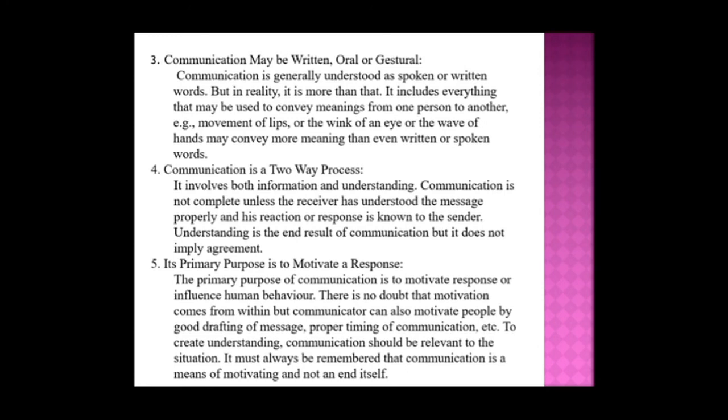The fourth characteristic is that communication is a two-way process — it involves both information and understanding. Communication is not complete unless the receiver has understood the message properly and their reaction or response is known to the sender. Understanding is the result of communication, but it does not imply agreement. The fifth characteristic is that its primary purpose is to motivate a response or influence human behavior.